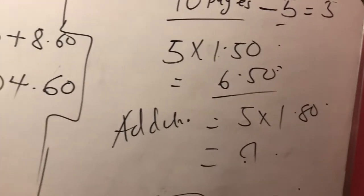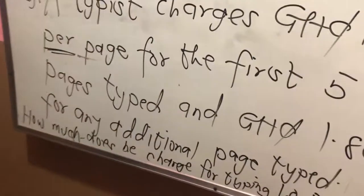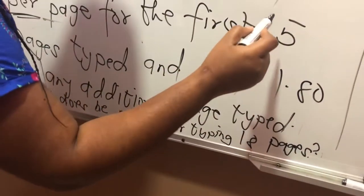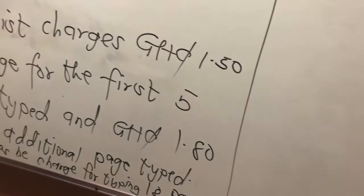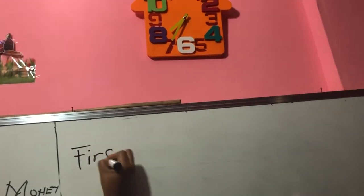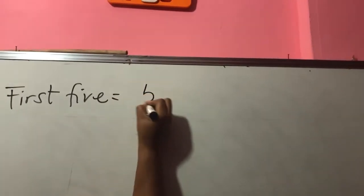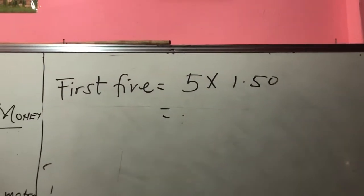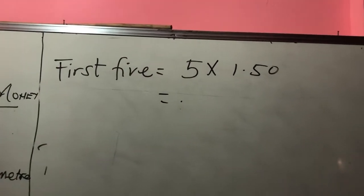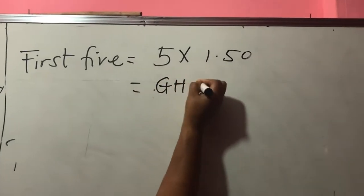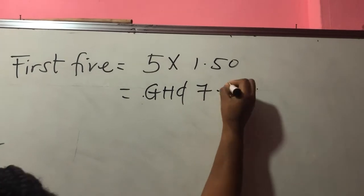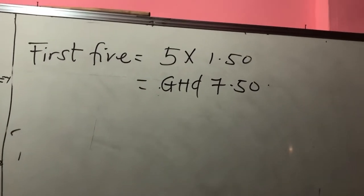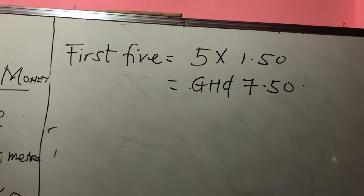Now let's pick the actual question. The number of pages being typed is 18. So you write: first five pages = 5 times 1 cedi 50 pesewas. Pay attention — the correct answer is 7 cedis 50 pesewas. So for the first five pages, you are paying 7 cedis 50 pesewas.